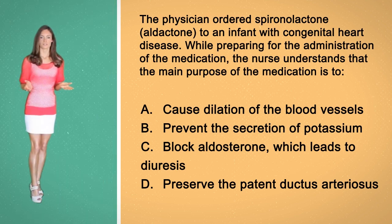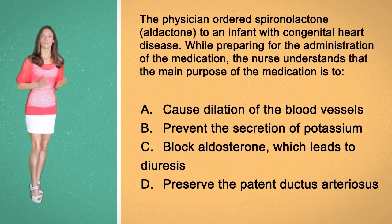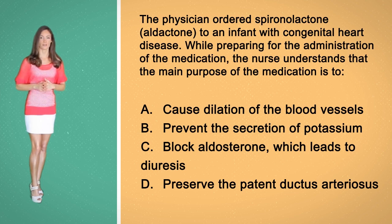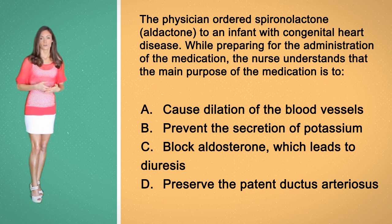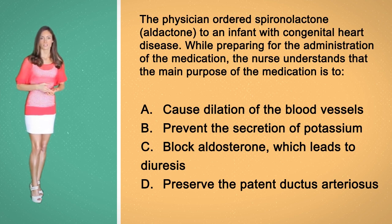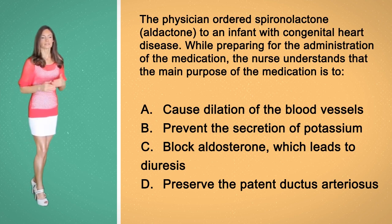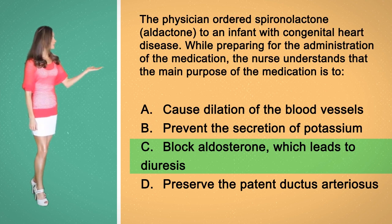So let's discuss these answer options. Option A is incorrect because aldactone does not cause vasodilation. Option B is incorrect because aldactone is a potassium sparing diuretic. Option D is incorrect because aldactone does not affect the ductus arterioles. Aldactone is a diuretic that blocks aldosterone. Answer C is correct because use of this medication is common in children with congenital heart disease for the prevention and treatment of congestive heart failure, making C the final and correct answer option.